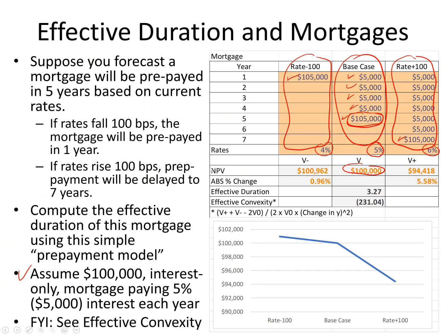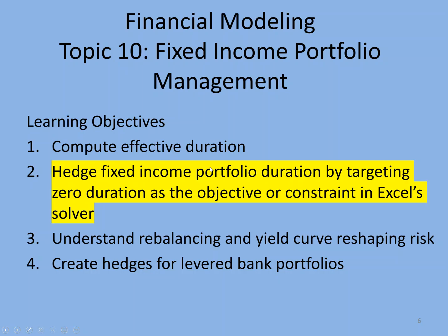In this topic, we talked about what effective duration is — a way of calculating the interest rate sensitivity of a set of cash flows that are not bonds, by simply shocking rates up or down 100 basis points and calculating the average percent change. In the next topic, we'll talk about how to hedge that pension liability.